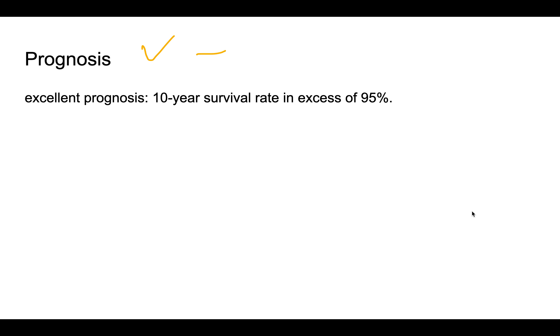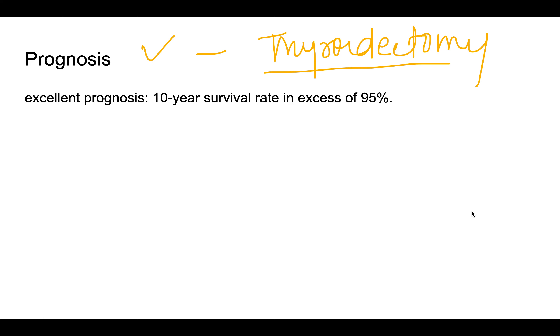Treatment of papillary carcinoma thyroid involves total thyroidectomy, performed because the tumor can be multifocal. The prognosis is very excellent — patients survive in approximately 95% of cases. This concludes the discussion of papillary carcinoma thyroid; other thyroid tumors will be discussed in the next video.